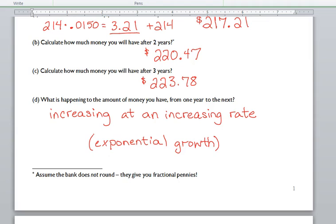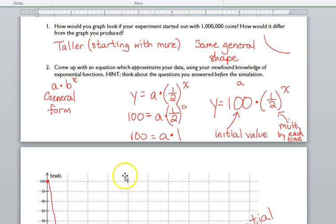So, exponential decay, what was happening there? We were decreasing. But, what happened to the rate at which we were decreasing? Let's look back at those numbers for a second.